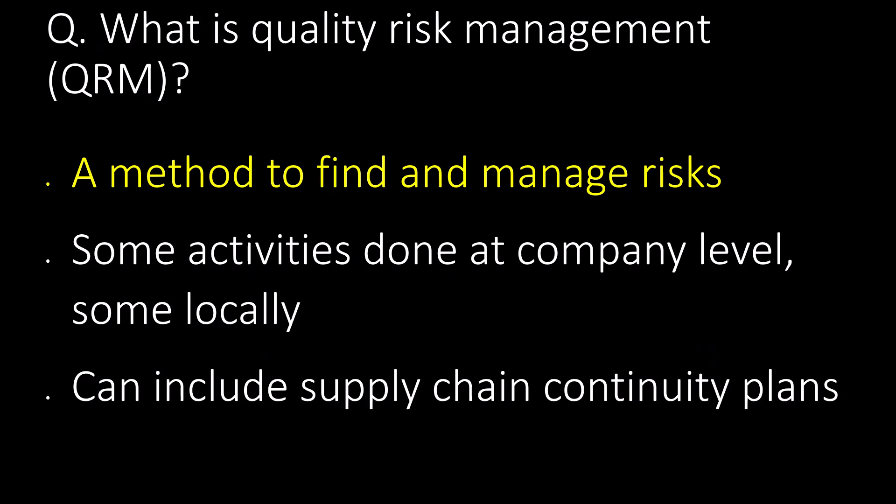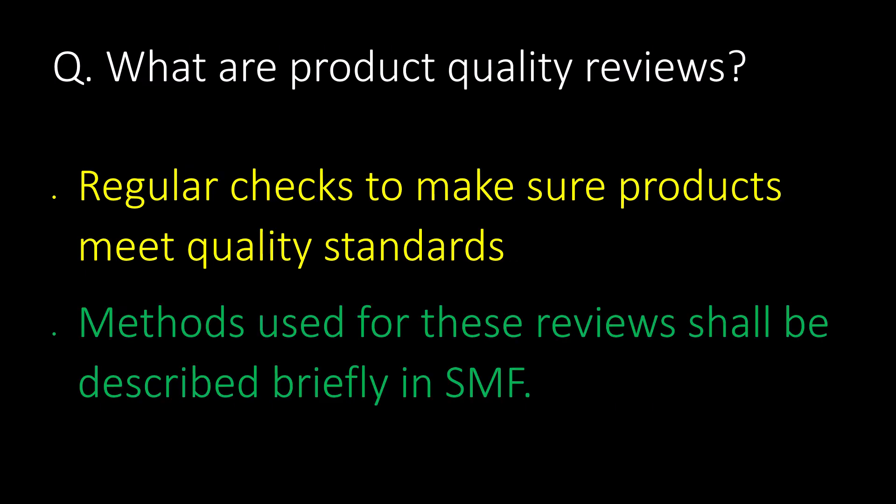Very important question: what is quality risk management or QRM? QRM is a method to find and manage risk. Some activities are done at company level and some locally. The quality risk management part of the Sitemaster file may include supply chain continuity plans. Product quality reviews are regular checks to make sure products meet quality standards, and the methods used for these reviews shall be described briefly in the SMF.